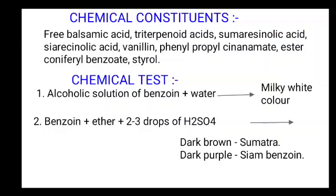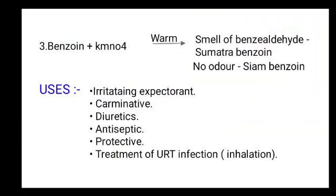Chemical tests of benzoin. First: alcoholic solution of benzoin — add water — it forms a milky white color solution. Second: benzoin — add ether, then add 2-3 drops of H2SO4 sulfuric acid solution — it forms dark brown color in the presence of Sumatra benzoin, and dark purple color in the presence of Siam benzoin. Third test: benzoin — add potassium permanganate solution — warm the solution — forms a smell of benzaldehyde in the presence of Sumatra benzoin. No odor is produced in the presence of Siam benzoin.